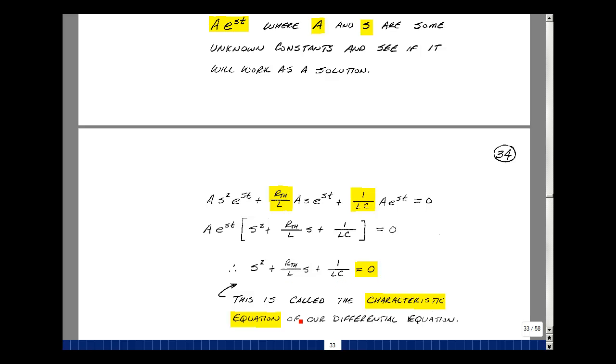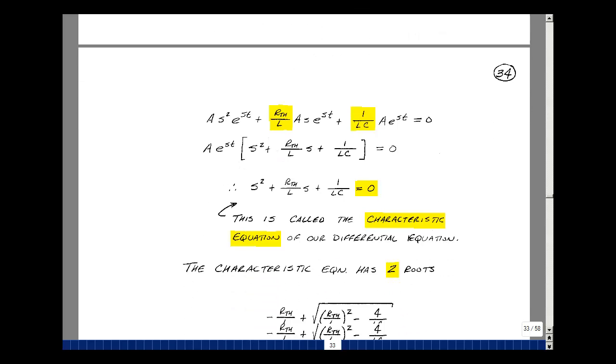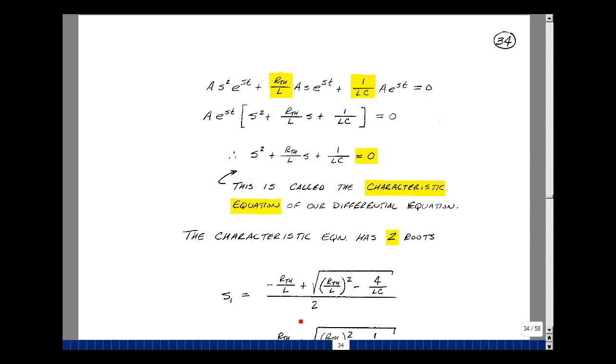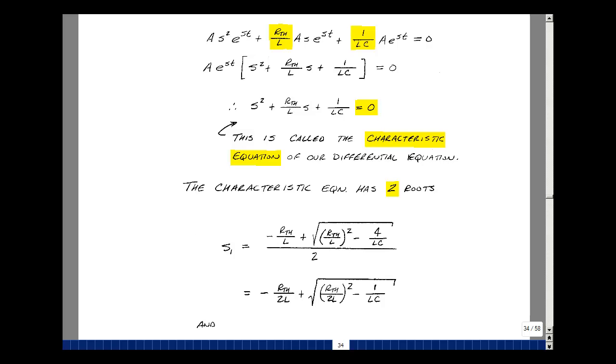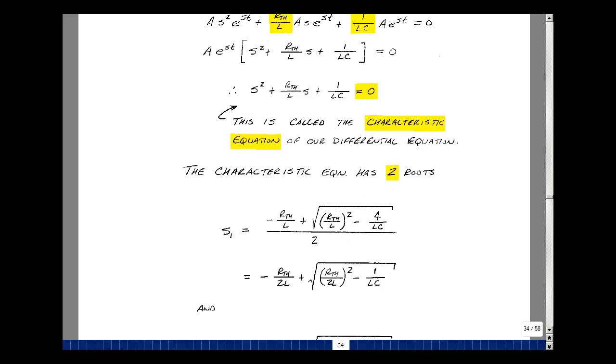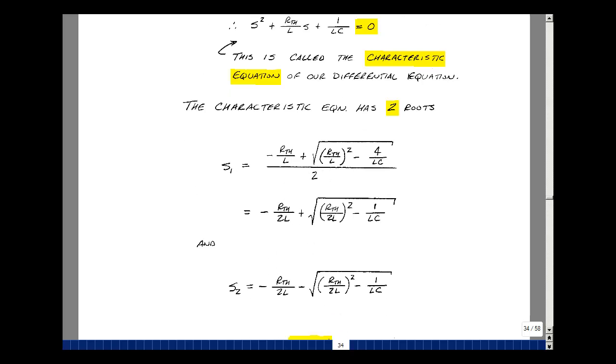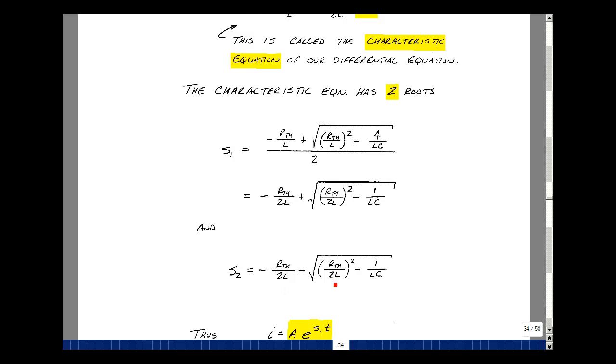But this is the form of a second order equation, and so there actually are two roots that satisfy this equation, and we can use the quadratic formula. And that's equal to minus this term, which is R thevenin over L, plus or minus the square root of this term squared, minus 4 times this coefficient, which is 1, times this coefficient, which is 1 over LC. And then we divide by twice the coefficient that's multiplying S squared. That would just be 2 times 1. We also have the negative root of that 2.